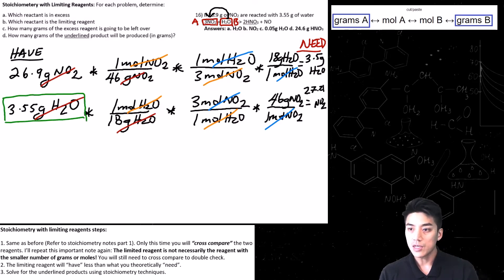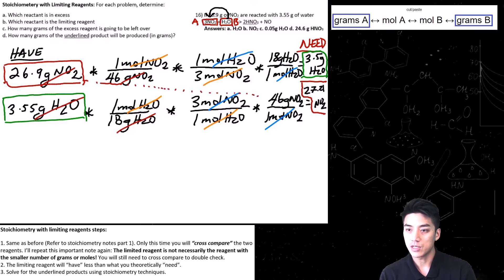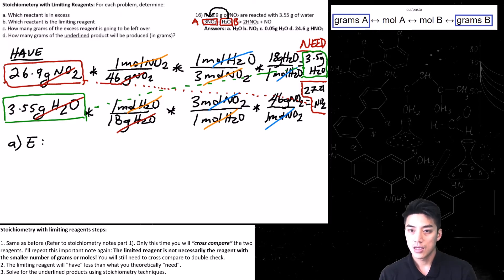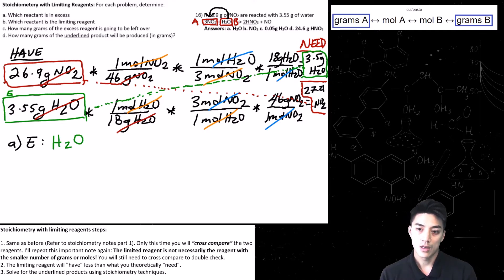I'm going to box water in green and NO2 in red — they're diagonal from each other, which is the way it's supposed to look. I'll draw dotted lines connecting the boxes of the same color so it's easy to see how things stack up. Now we can answer the questions. Question A asks which reactant is in excess. Water is in excess because the amount I have — 3.55 grams — is greater than what I need, which is just 3.5 grams. So I have a little bit of extra water; water is in excess.